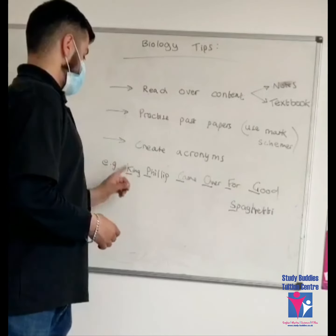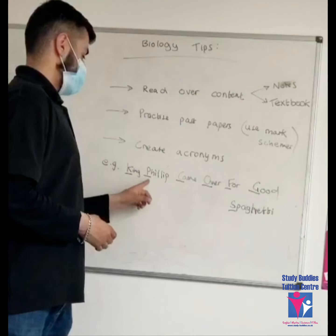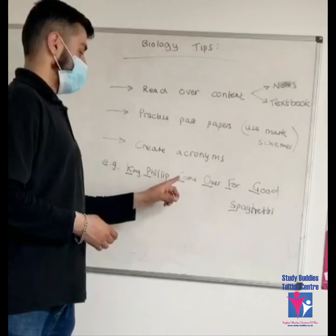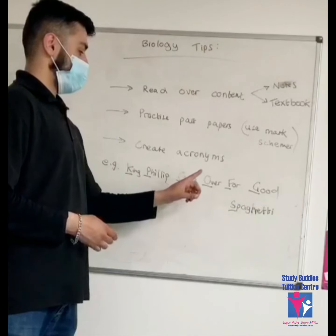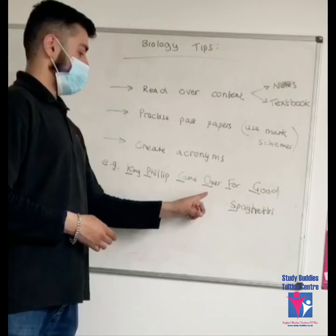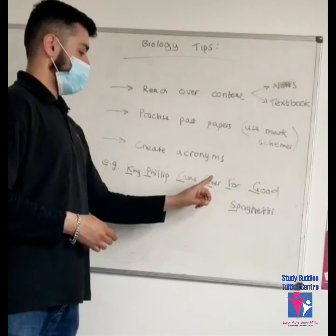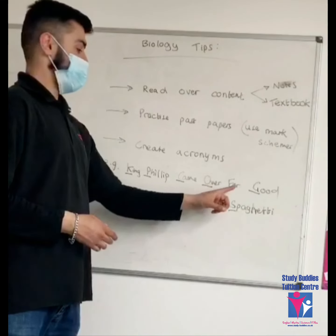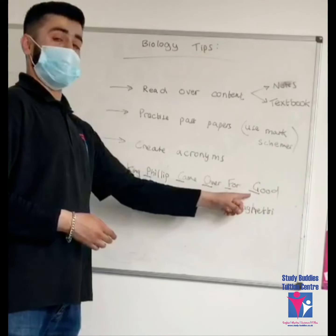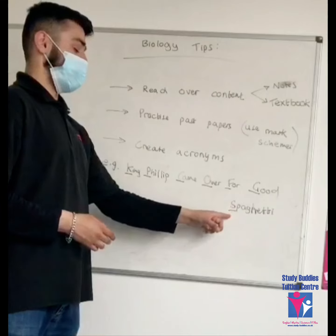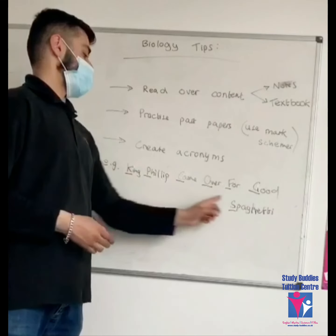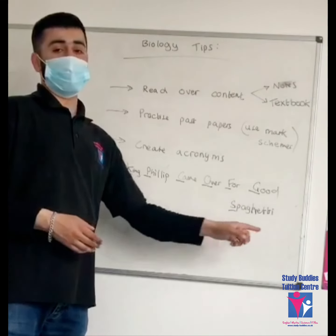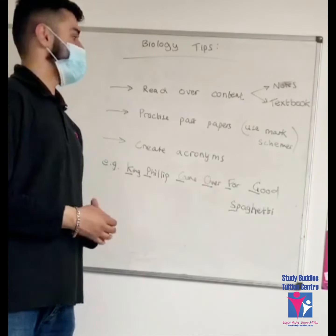So: Kingdom, Phylum, Class, Order, Family, Genus, and Species. This acronym makes it much easier to remember all seven stages.